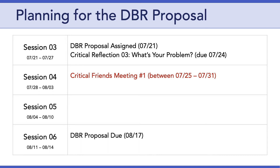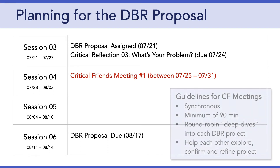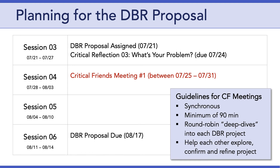Let me talk about some guidelines for those Critical Friends meetings. You're all in groups of three, and these Critical Friends meetings should be synchronous. I want to encourage you to block off a minimum of 90 minutes — the thinking there is that each person in the group is going to have 30 minutes to focus on their work. Honestly, I would recommend closer to two hours. You can use whatever process you want, but the goal is to have a round-robin deep dive into each of your DBR projects and to help each other explore, confirm, and refine your project from week to week.